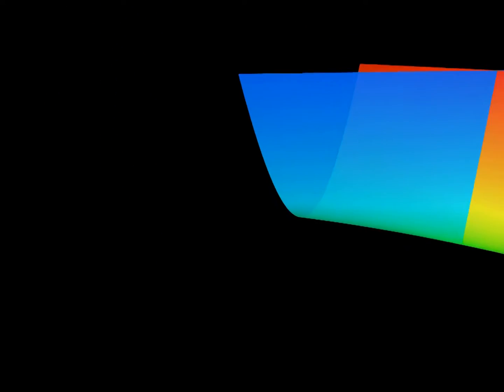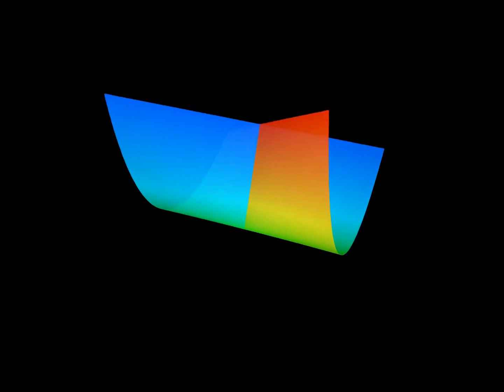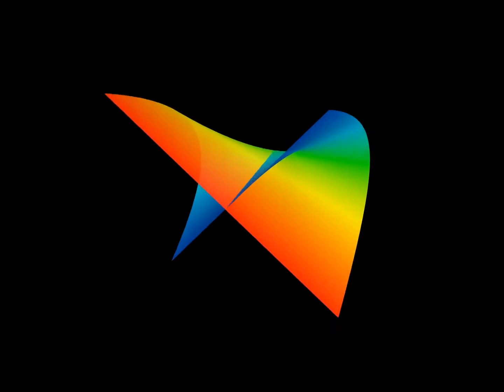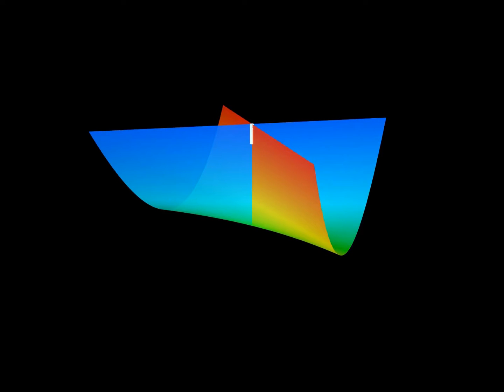There is a further singularity that cannot be avoided. It is made by a piece of the surface that intersects itself in a line of double points which has an end point. This end point is called branch point.